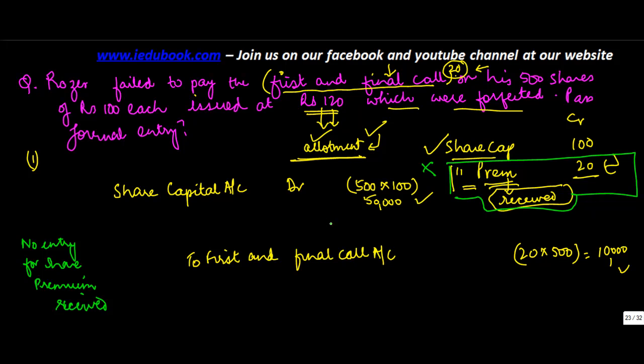So we are done with the entries. Where does the balance amount go? It goes to the share forfeiture account. Now had it been that the premium of 20 was not received, let's say you did not receive 10 rupees of the share premium out of this account.